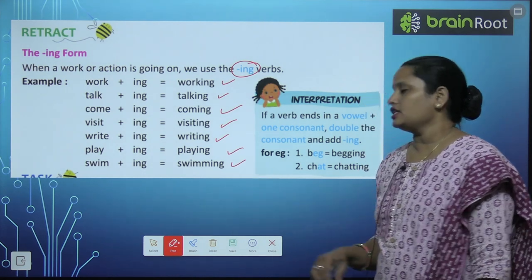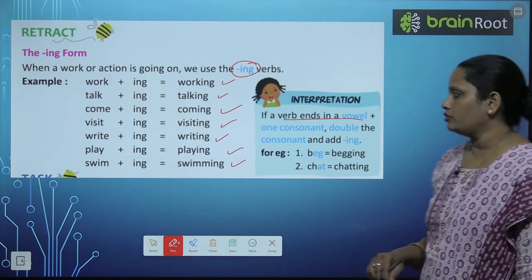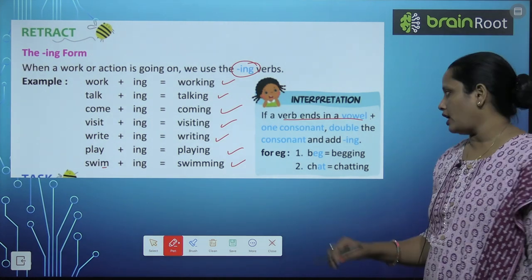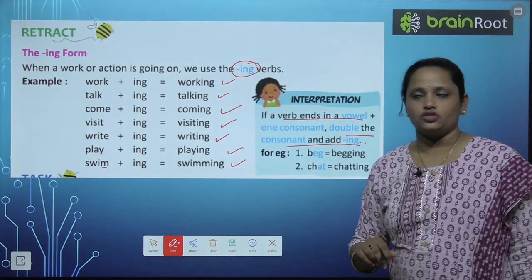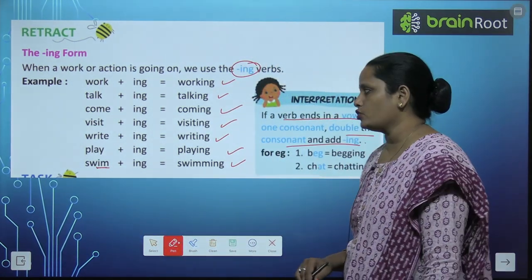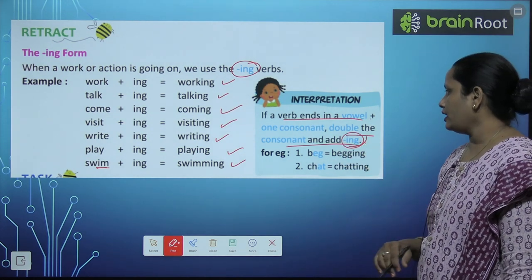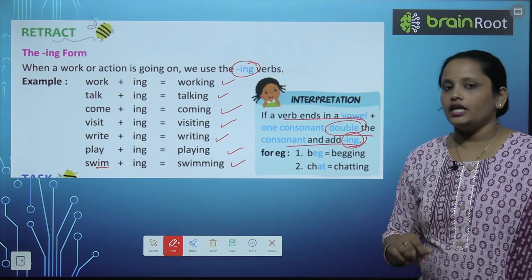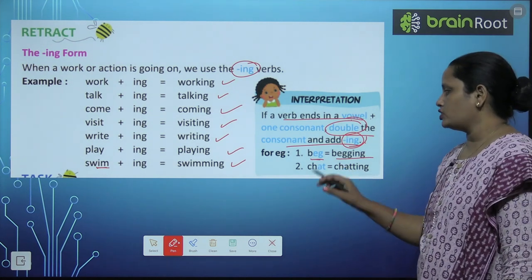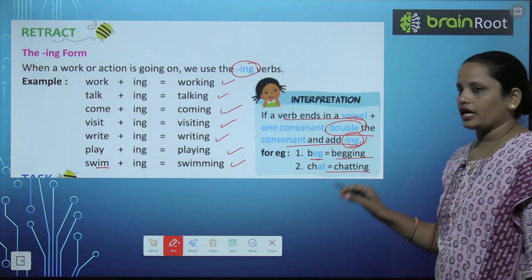And swim + ing = swimming. If a verb ends in a vowel plus consonant, double the consonant and add ING. Agar koi bhi verb vowel aur consonant mein khatam ho raha hai, to consonant ko double karke ING add karte hain. Jaise beg becomes begging — e vowel hai, g consonant hai. Chat becomes chatting.